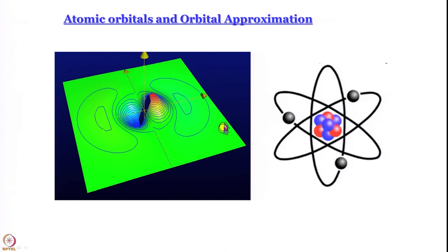What you see here is a 3D depiction of the 3pz orbital along with contours. The question that arises is: we have put in so much time and effort to learn about atomic orbitals — of what use are they? We want to talk about atoms with many electrons and about molecules. Are the simple one-electron wave functions of any use? As we will discover, they are of considerable use, at least as a starting point.